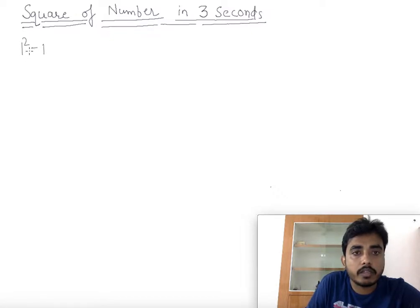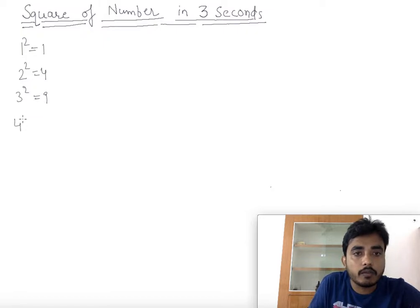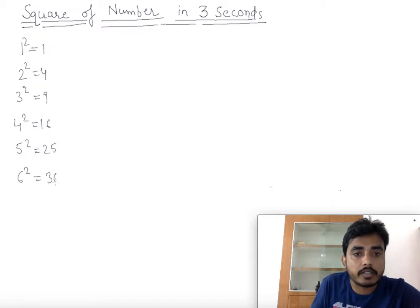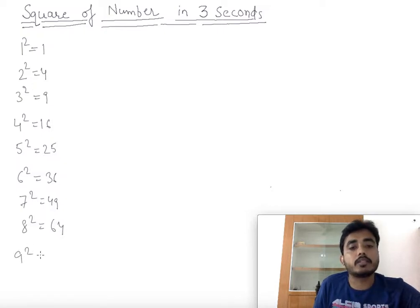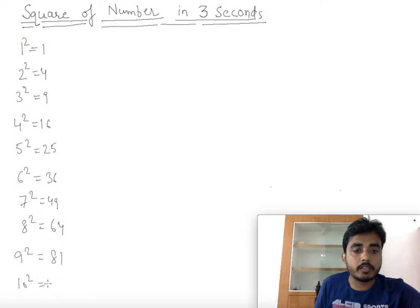1 squared is 1, 2 squared is 4, 3 squared is 9, 4 squared is 16, 5 squared is 25, 6 squared is 36, 7 squared is 49, 8 squared is 64, 9 squared is 81, 10 squared is 100.